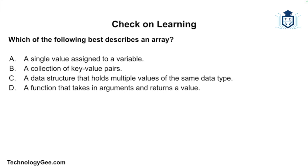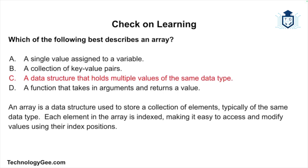Question 2: Which of the following best describes an array? Is it a single value assigned to a variable? A collection of key-value pairs? A data structure that holds multiple values of the same data type? Or a function that takes in arguments and returns a value? The correct answer is: a data structure that holds multiple values of the same data type. An array stores a collection of elements, each indexed, making it easier to access and modify values using their index positions.